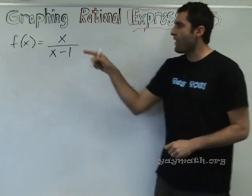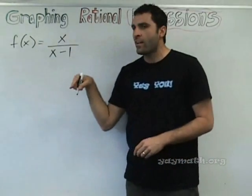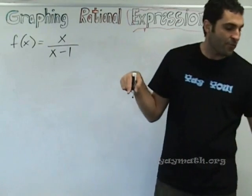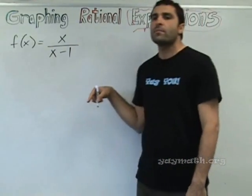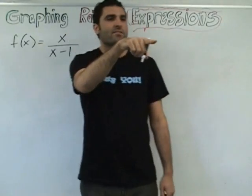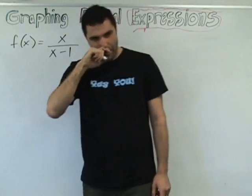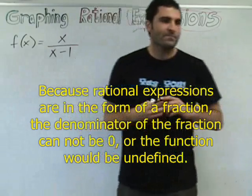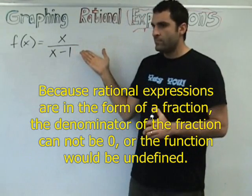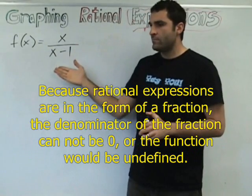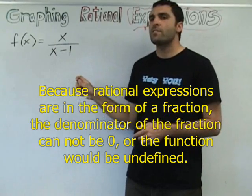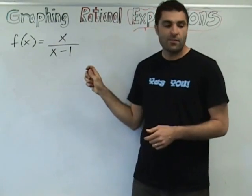This is a function, f of x equals... We have a volunteer to read loudly the first bullet point. Because rational expressions are in the form of a fraction, the denominator of the fraction cannot be zero, or the function would be undefined. So, the denominator can't be zero.